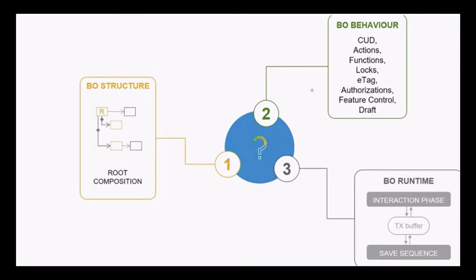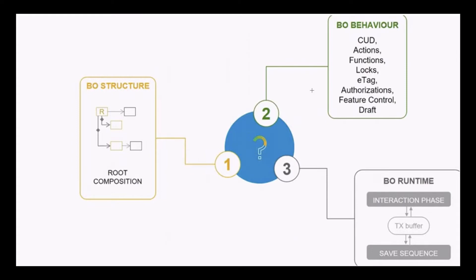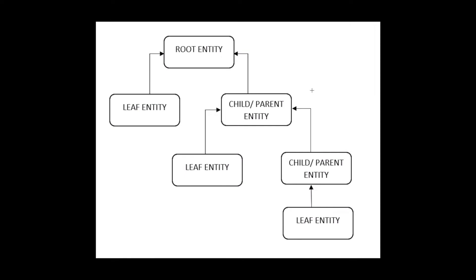So it has been categorized into three: first one, business object structure; second, business object behavior; third, business object runtime. So let's see what is business object structure. It has a hierarchical data model structure where a top node defines a root entity.